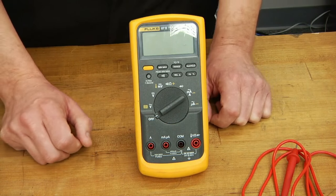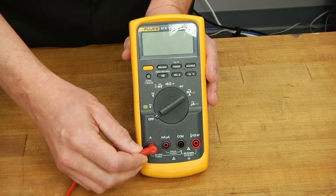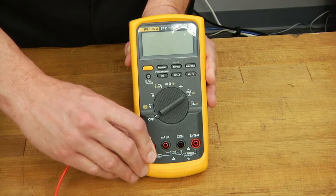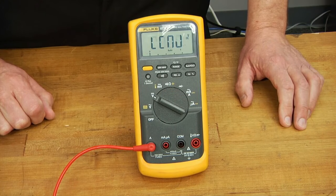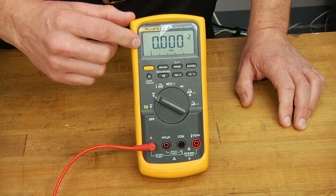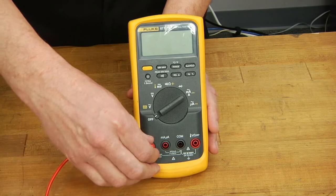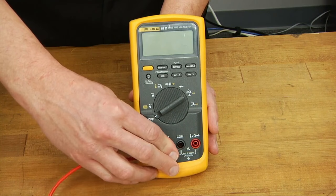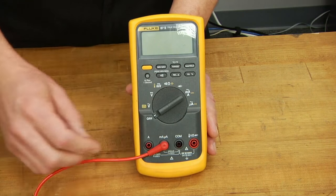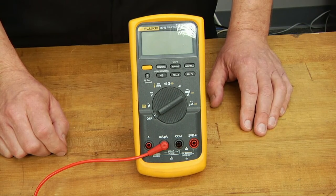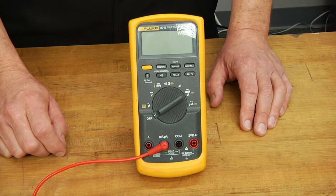Before we use the meter, we should first check the fuses. To do this, we insert our red lead into either the amp terminal or the microamp terminal, and then turn the meter on to any position other than the amp setting. If you hear a beep and see the word lead at the top display, you know that the fuse is working properly. To test the milliamp fuse, we move the lead over to that position and do the same thing. That beep tells us that our fuses are good. If we did not hear a beep, then our fuse would be blown and we would need to service the meter before using it.